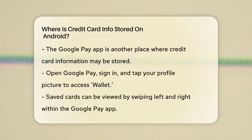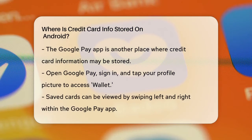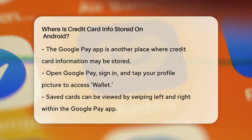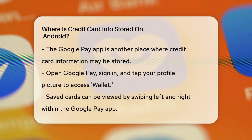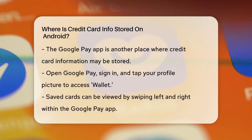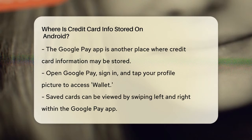Another place your credit card information might be stored is in the Google Pay app. To check this, open the Google Pay app on your phone and sign in if you haven't already. Tap your profile picture and select Wallet. You'll see your saved cards on the next page — you can swipe left and right to find all the cards you've saved as payment methods.